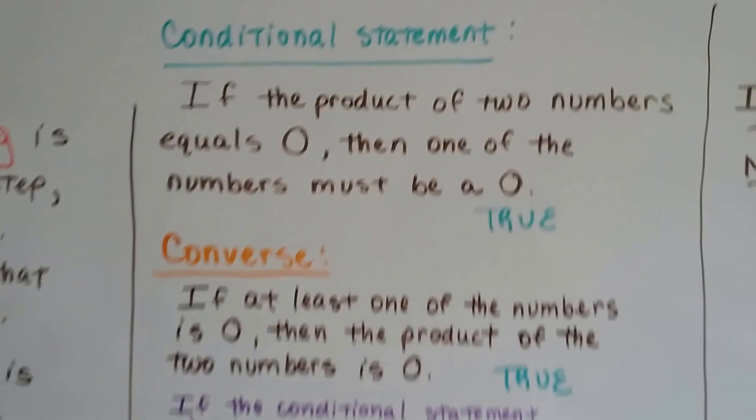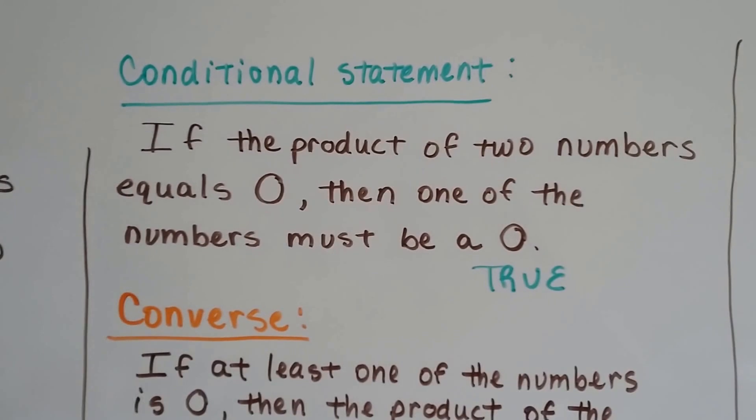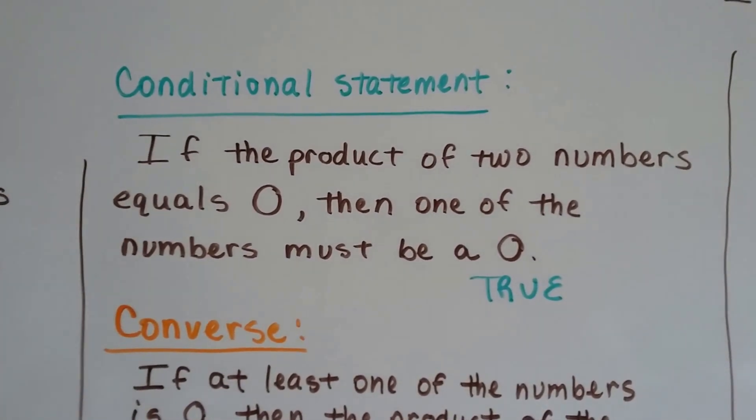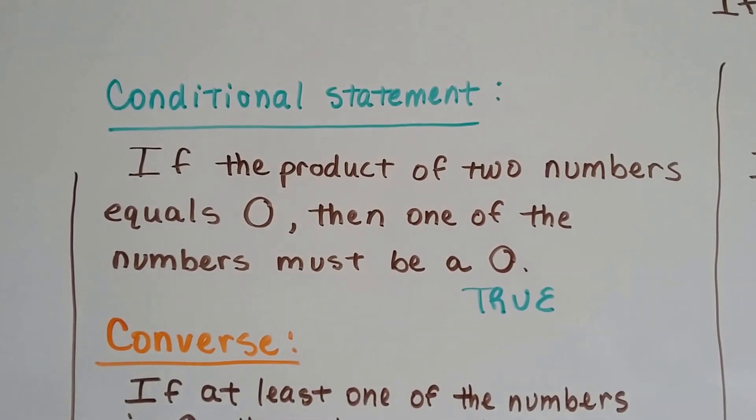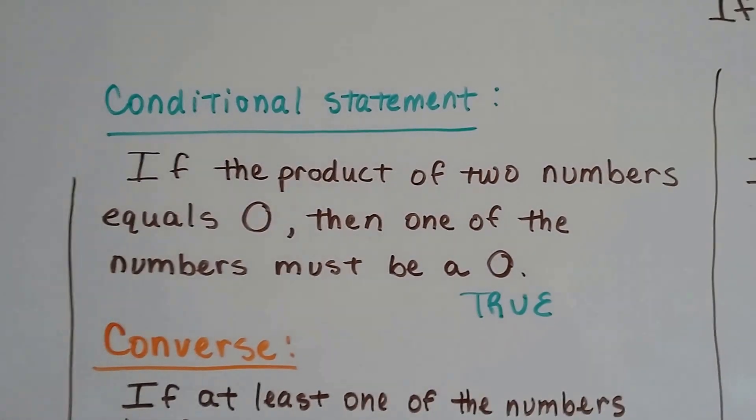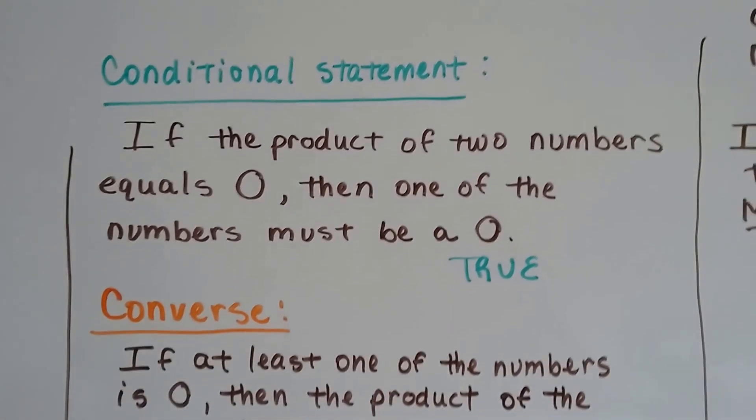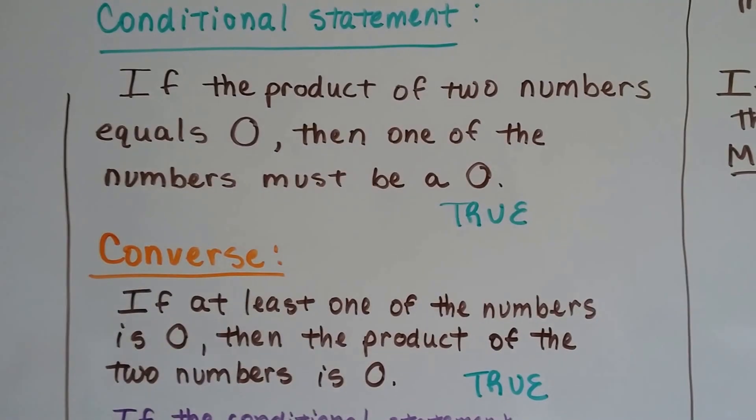So if we have a conditional statement: if the product of two numbers equals zero, then one of the numbers must be zero. That's true, because when you multiply by zero, it's zero. So one of them has to be zero, if not both.